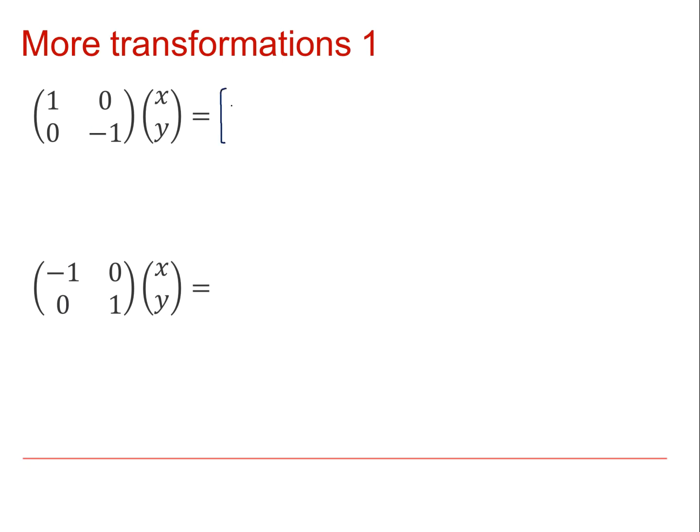OK, the first one transforms the point x, y onto the point x minus y. Looking at this graphically, we can see that for a general point x, y, the x coordinate remains the same, but the y coordinate becomes negative. This is a reflection in the x axis.